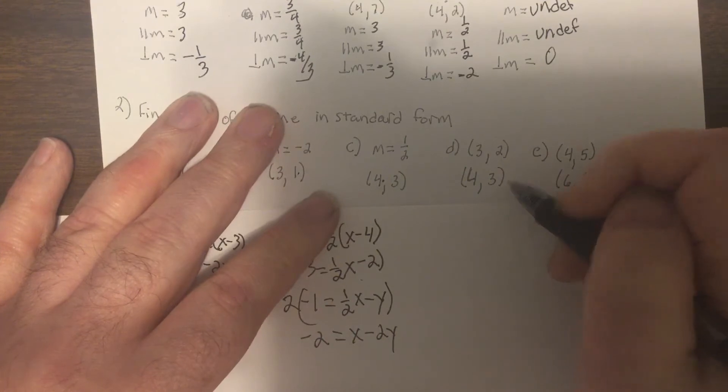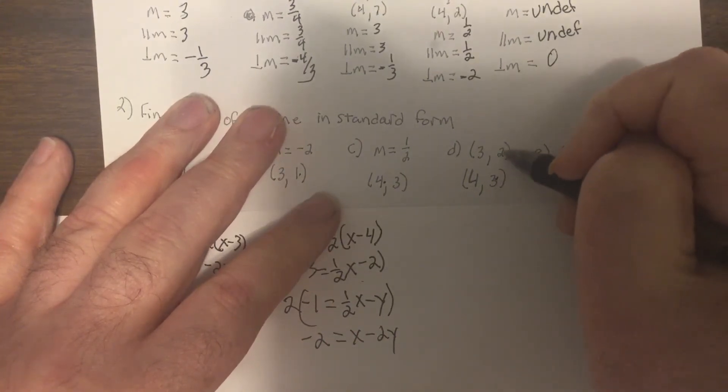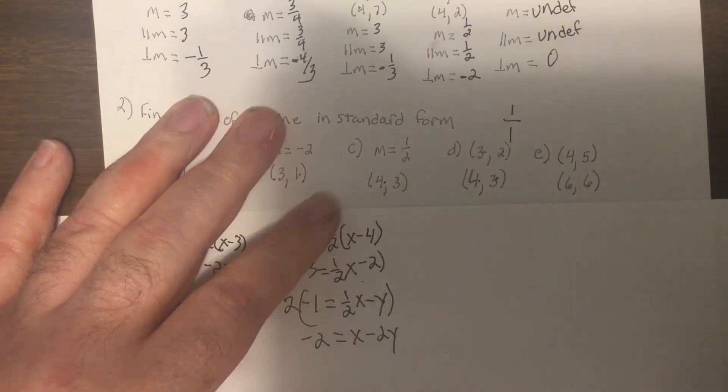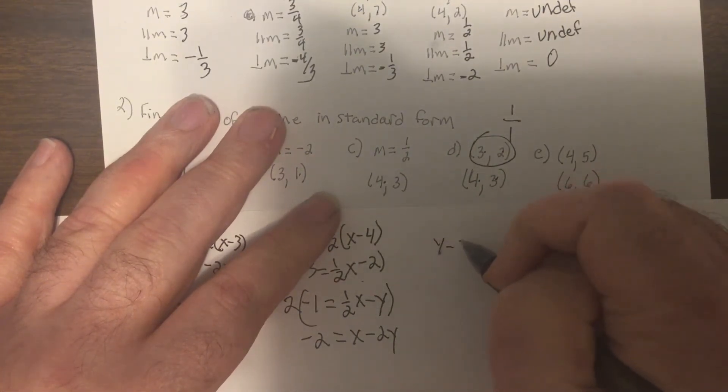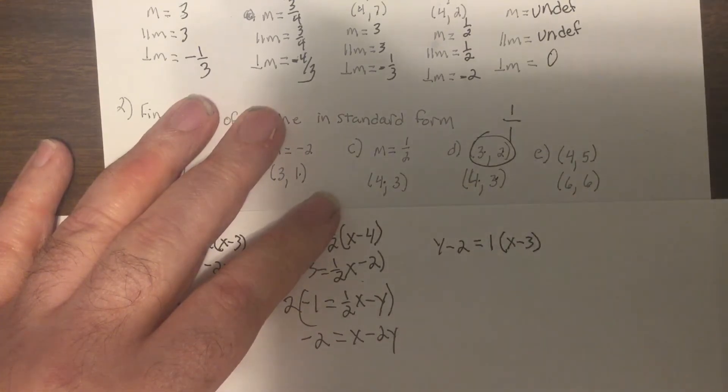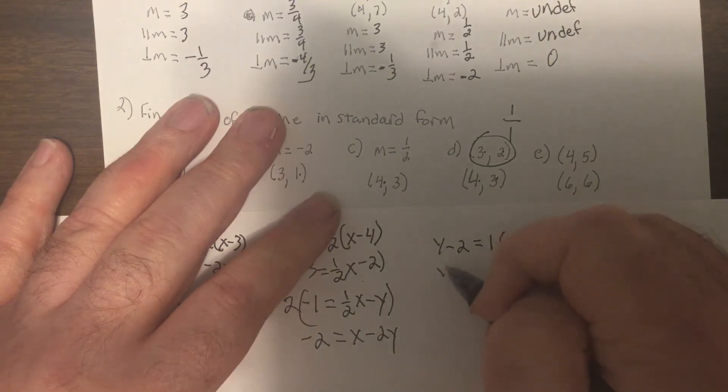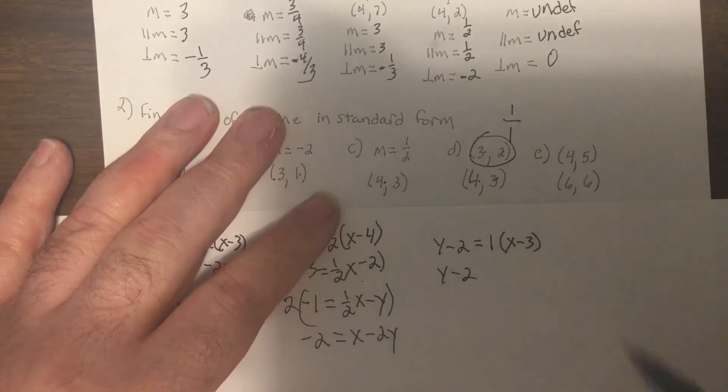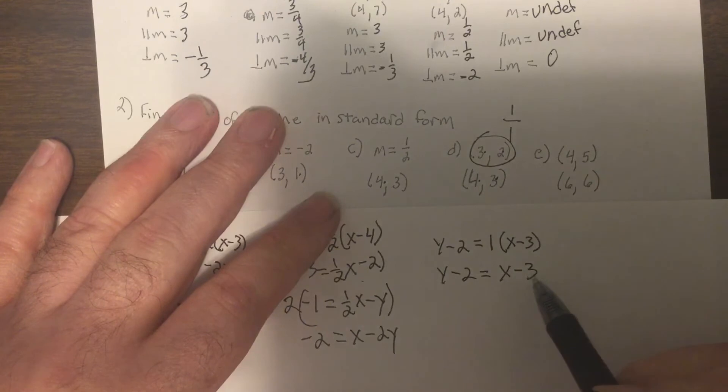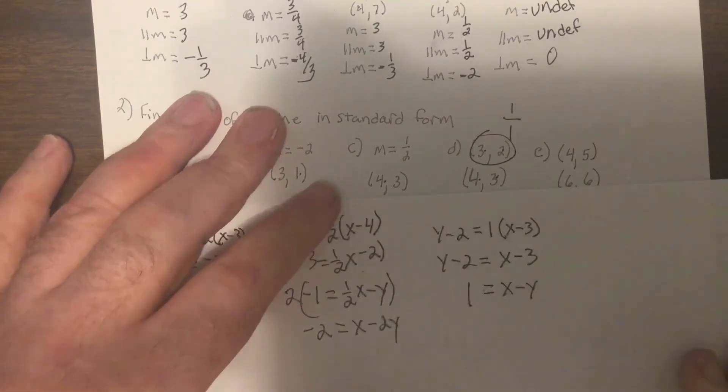So this one, I need to find the slope. So it'd be 3 minus 2 is 1 over 4 minus 3 is 1. So the slope is 1. So I'll pick 3, 2 as my point and use point slope. Y minus 2 equals 1 times x minus 3. So I distribute the 1, right there. So I'd have equals x minus 3. So I will subtract y and add 3 to get the x and y on the same side. Add 3. This would be 1.